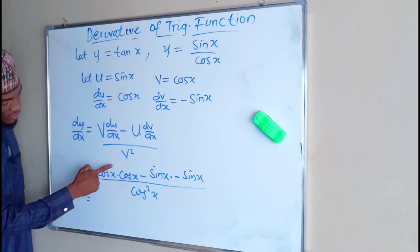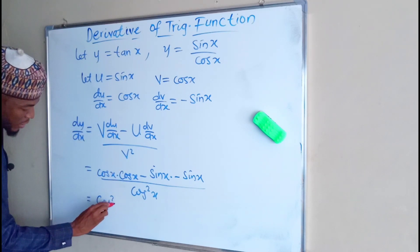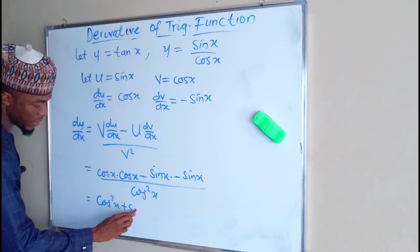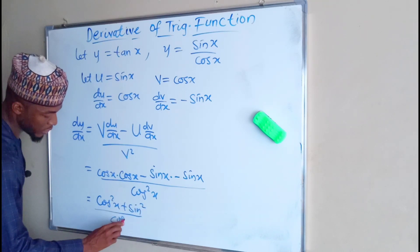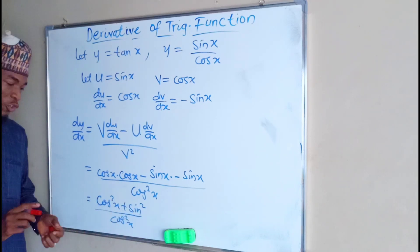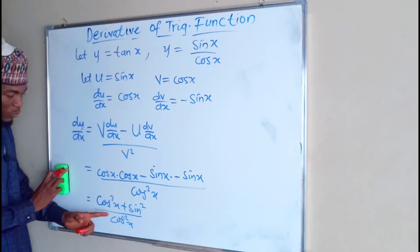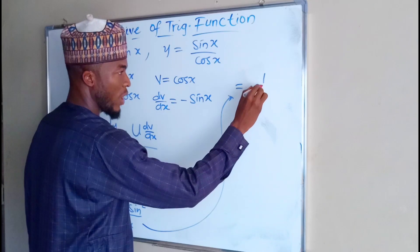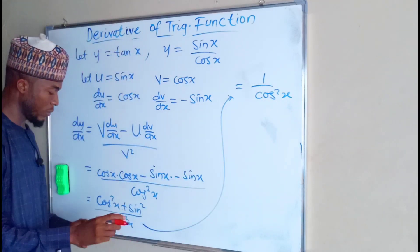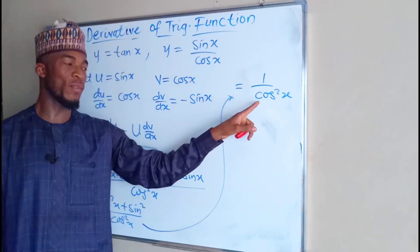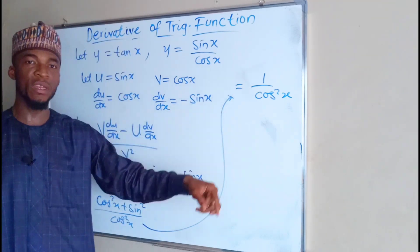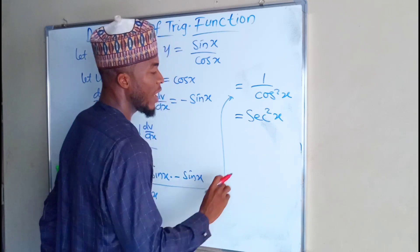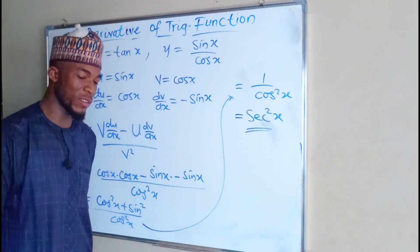This is equal to cos times cos which is cos squared x, minus minus which is plus, sin times sin which is sin squared x, all divided by cos squared x. From trigonometric identities, you know that cos squared x plus sin squared x is equal to 1. So this becomes 1 divided by cos squared x. You know that 1 over cos is sec, therefore 1 over cos squared is sec squared. So this is sec squared x. Therefore, the derivative of tan x is equal to sec squared x. Hence, proof.